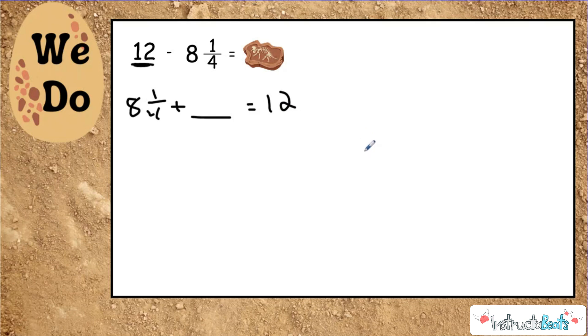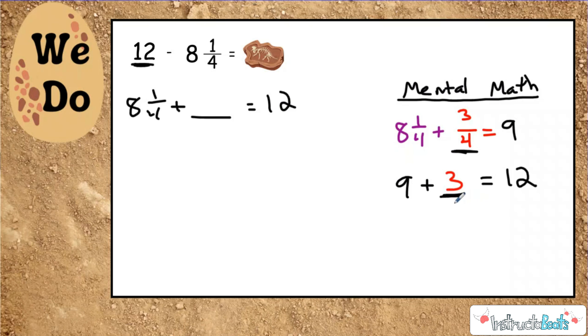So we're going to start at eight and one-fourths, and we want to count up to get to twelve. So if you start at eight and one-fourths, you would need to add three-fourths to get to your next whole number, which of course would be nine. Then from nine, it's a pretty easy jump, because nine plus three wholes would make you equal to twelve. So if you add up the two parts that we were counting up, your answer, the difference between eight and one-fourths and twelve should be three and three-fourths. So you can see that one is a lot quicker than lining it up vertically and regrouping, although you should be able to do both.